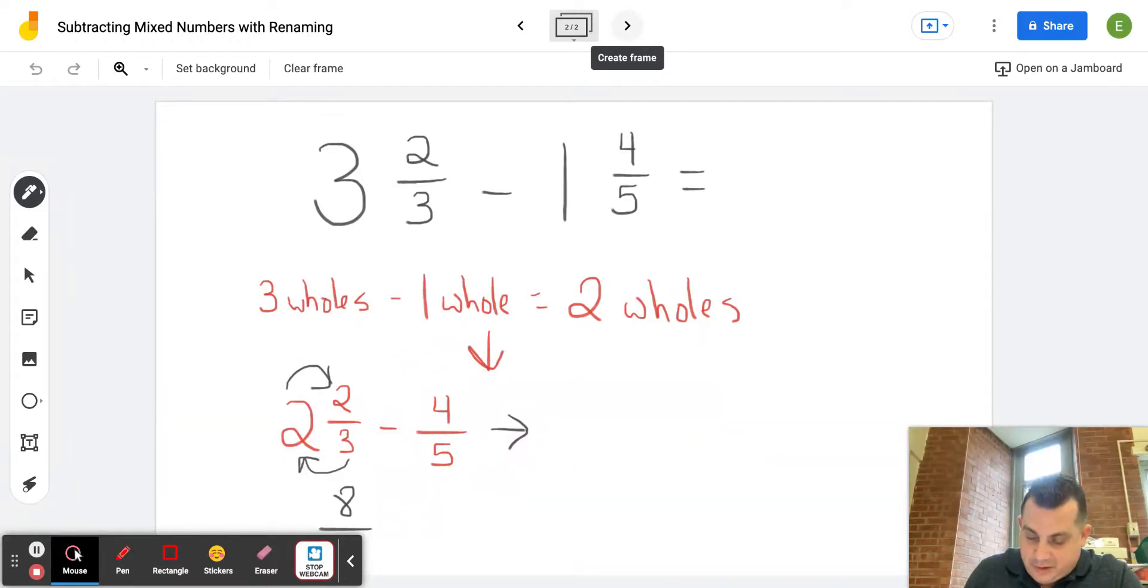So now I'm going to rewrite it over here, eight-thirds minus four-fifths. Now we could just subtract these fractions because we know eight-thirds is the greater fraction because it's greater than one and four-fifths is less than one because five-fifths would be a whole. So this is set up correctly.